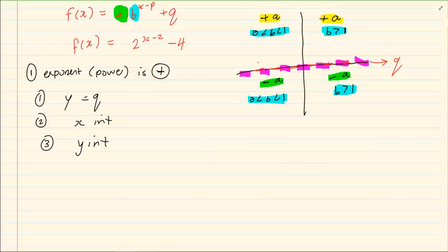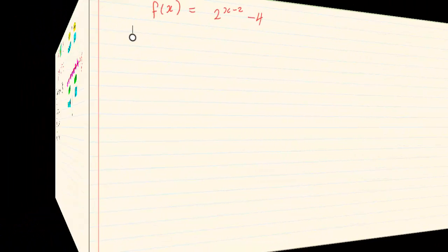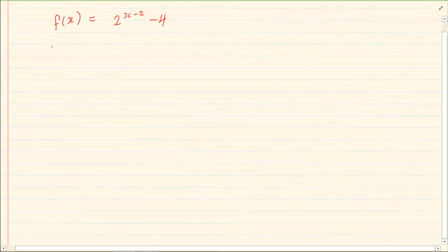Now let us draw the following graph. We are going to start with y is equal to minus 4. That is my asymptote.